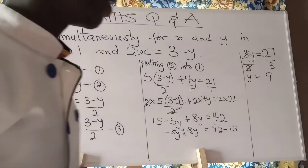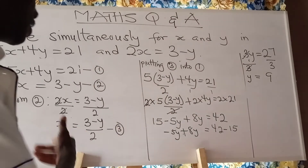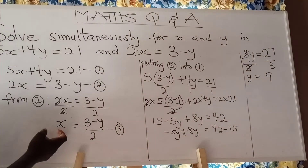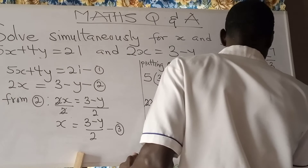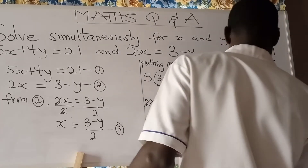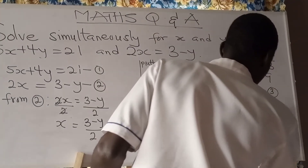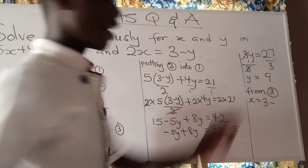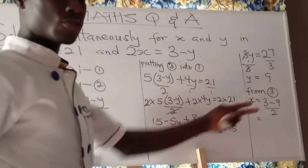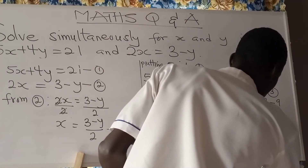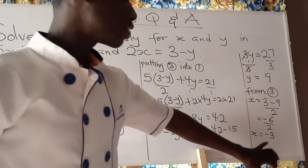After getting y equal to 9, we put it into equation 3 to find x. From equation 3, x is equal to 3 minus y, all divided by 2. In place of y, we write 9. So x equals 3 minus 9 all divided by 2, which is negative 6 divided by 2, giving us negative 3.